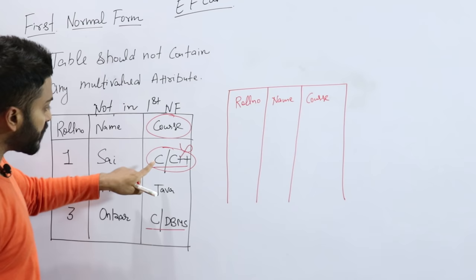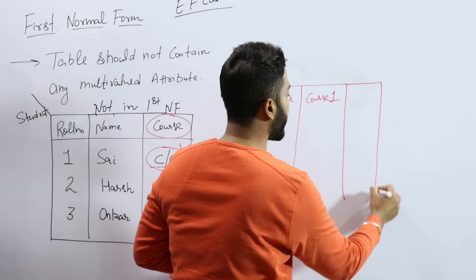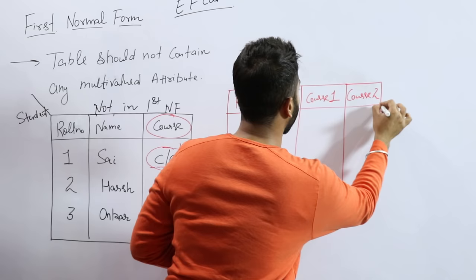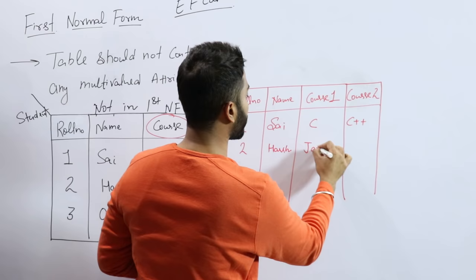Name of the student and course. So I have made two separate columns - one is course one and one is course two. Roll number one, Sine, C and C++. Roll number two, Harsh, Java.